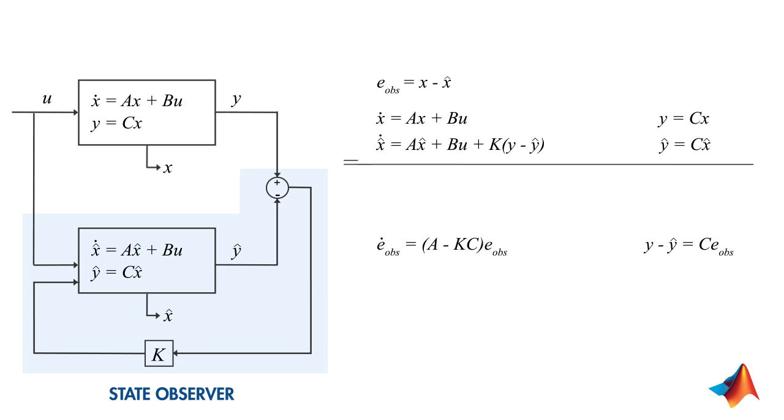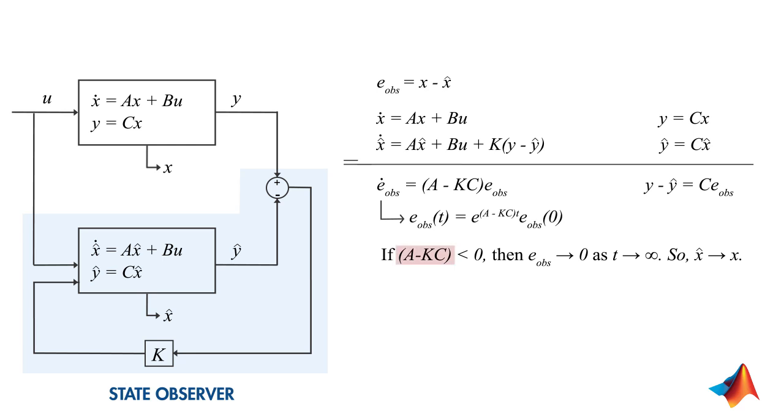The solution to this equation is an exponential function. What this means is, if this term is less than 0, we're good because we know that our error will vanish over time and x hat will converge to x. At this point, you may be asking if we really need the KC term in this equation, because even without the feedback loop that adds the KC term to the equation, we would have a decaying exponential function for the error.